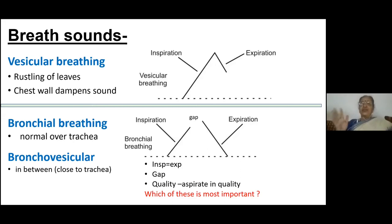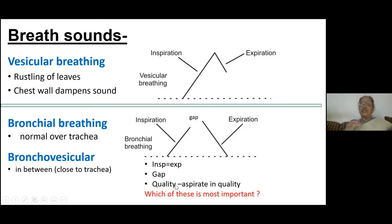The three characteristics of bronchial breathing as described in textbooks are: inspiration and expiration become equal, there is a gap between inspiration and expiration, and the quality of the respiration is different from vesicular — it becomes aspirate or guttural in quality. And the most important of all these is the quality of breathing.